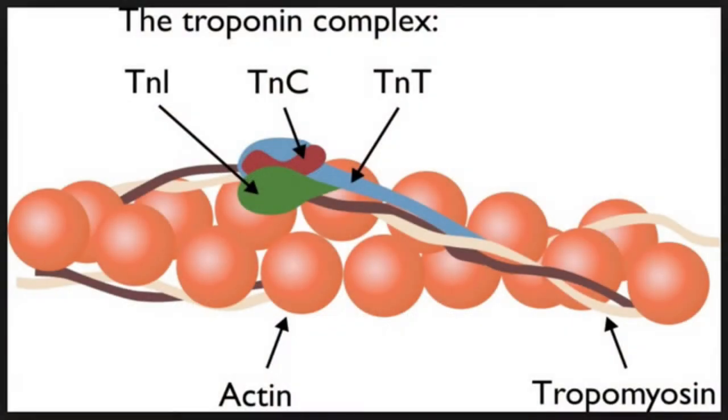Troponin regulates muscle contraction in the heart. There are three types: troponin C has a calcium-binding component, troponin I has an inhibitory component, and troponin T has a tropomyosin-binding component. Calcium binds to troponin — a thin filament — which triggers muscle force. As calcium rises intracellularly, muscles contract; as calcium falls, the muscles relax.